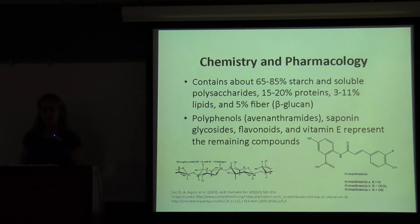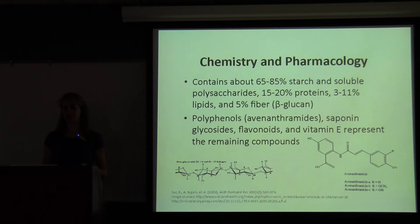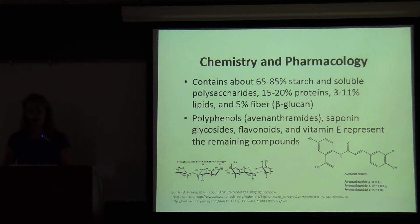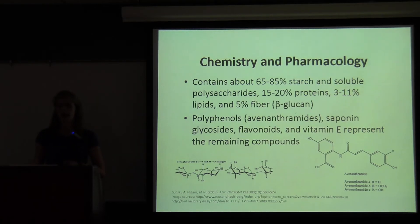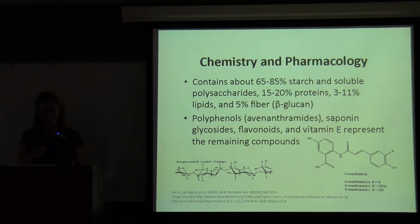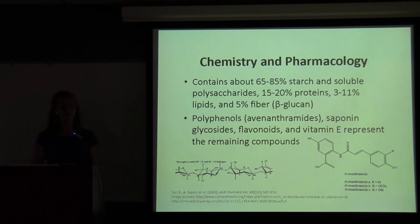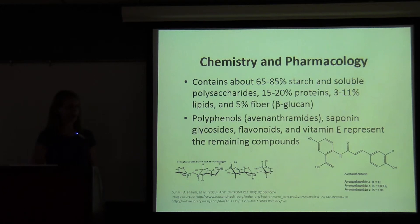These are the main chemical constituents, but I just wanted to focus mainly on two particular compounds. This is beta-glucan — it's a soluble dietary fiber present in about 5% of an oat groat. It has a high viscosity, and it's really important in many of the different emollient properties of oats as well as other medicinal properties. Oats also contain a pretty high percentage of polyphenols, but in particular the avenanthramides, which are unique to oats, are probably one of the most important compounds found in them. They exhibit a lot of different antioxidant properties as well as anti-inflammatory properties.